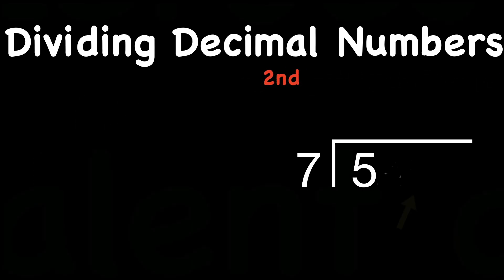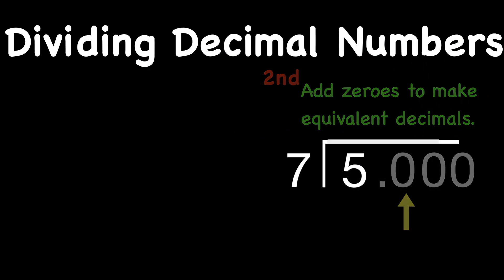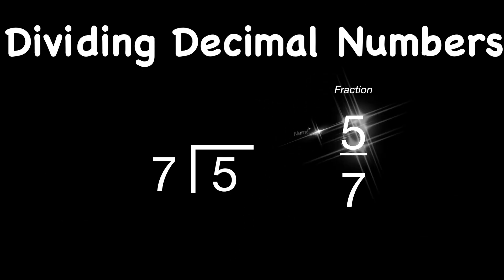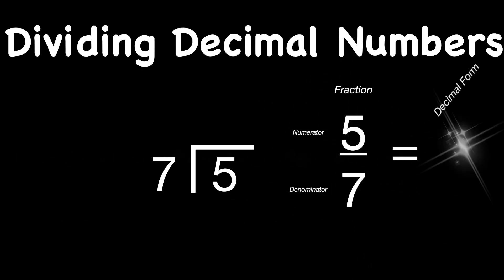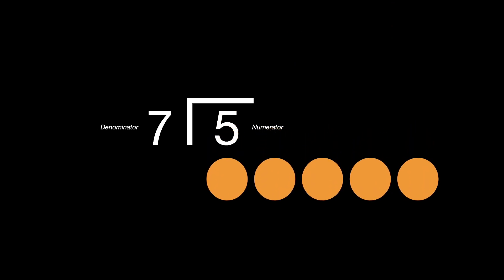Our second problem — we said that we will need to add zeros to make equivalent decimals. An example of when you will need to do that would be when you have fractions. For example, the fraction five-sevenths. If you wanted to convert that into decimal form, how you would do that is to divide the numerator of five by the denominator of seven. Notice that our denominator of seven is larger than our numerator. To illustrate that, let's just say if you have five pizzas — they're not the greatest pizzas, but you get the idea.